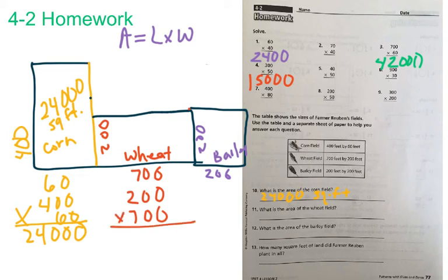Count them up. I have one, two, three, four zeros. So I'm going to write down one, two, three, four zeros. And seven times two is equal to 14. So I have 140,000 square feet. 140,000 square feet for the wheat field.